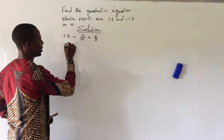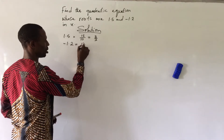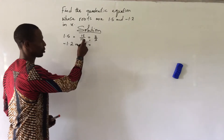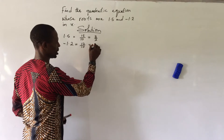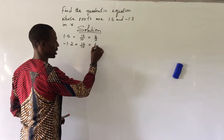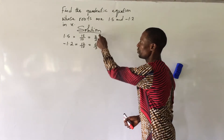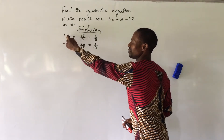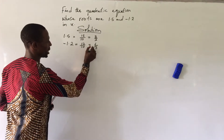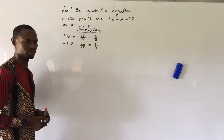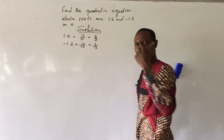Secondly, we have minus 1.2. We do the same thing: that is 12 over 10, and 2 can go into 12 and 2 can go into 10 with no remainder, giving us 6 over 5. So we are going to use minus 3 over 2 and minus 6 over 5 in place of 1.5 and minus 1.2.